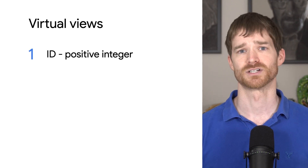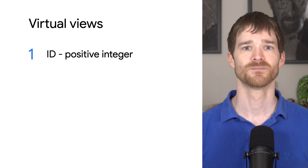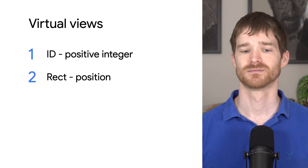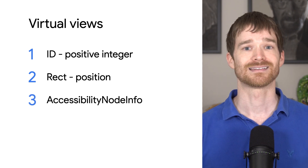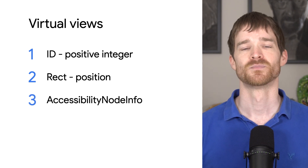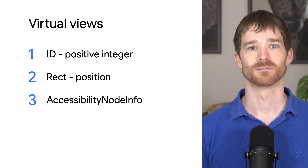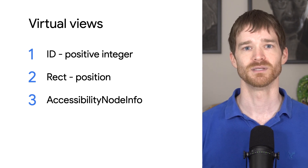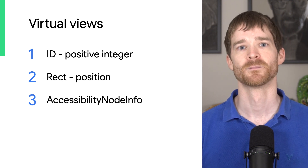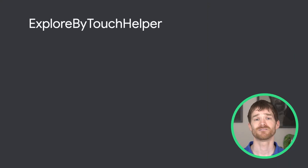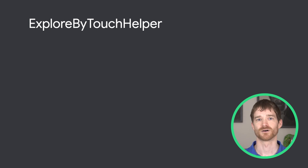A virtual view has three important parts. It has an ID, which should be a stable positive integer. It has a rectangle to represent its position on the screen. And it has an accessibility node info, which contains all the important information for accessibility, like the content description or whether it can be clicked. Now that we've discussed what a virtual view is, let's implement an ExploreByTouchHelper.